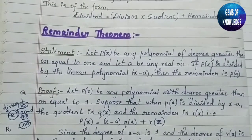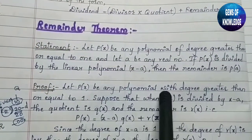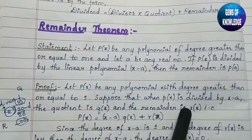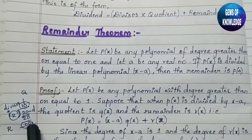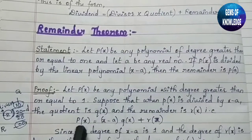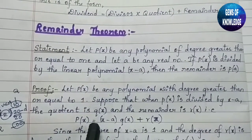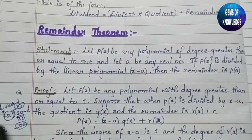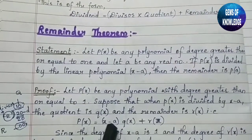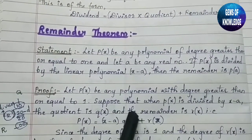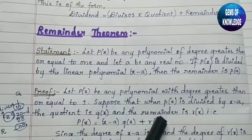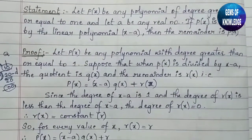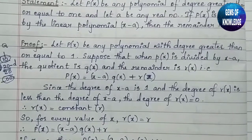So when we divide p(x) by (x − a), we get quotient q(x) and remainder r(x). This gives us the formula: p(x) = (x − a)·q(x) + r(x), where (x − a) is the divisor and r(x) is the remainder. Now, the degree of (x − a) is 1, and the degree of r(x) must be less than the degree of (x − a).